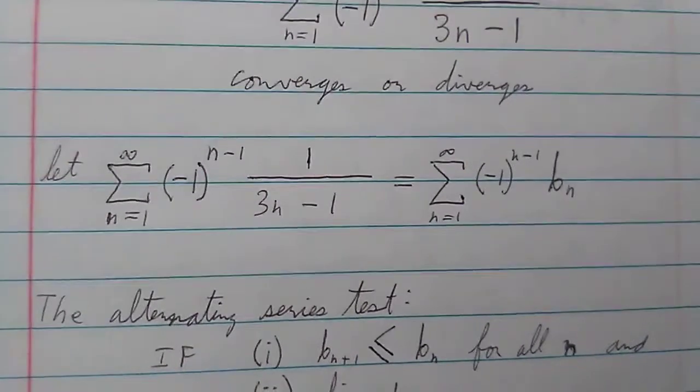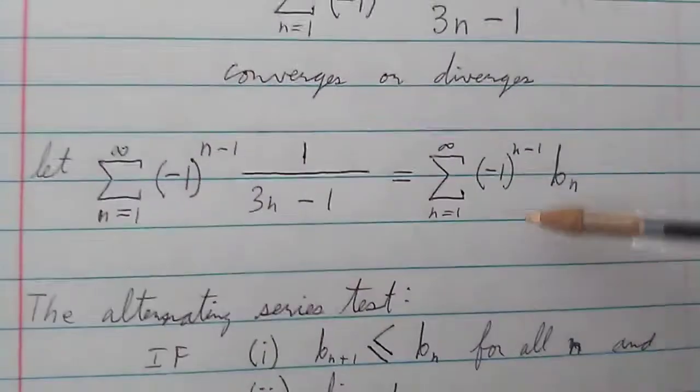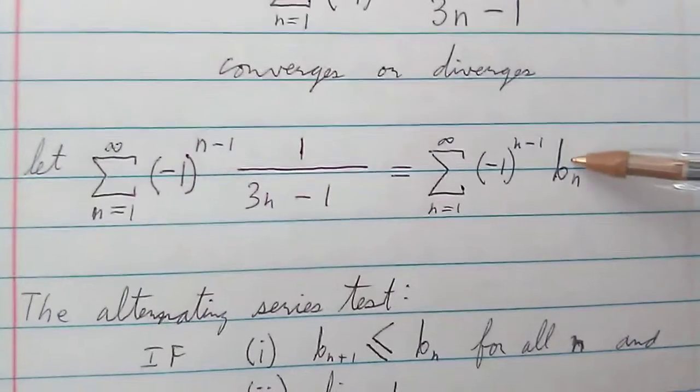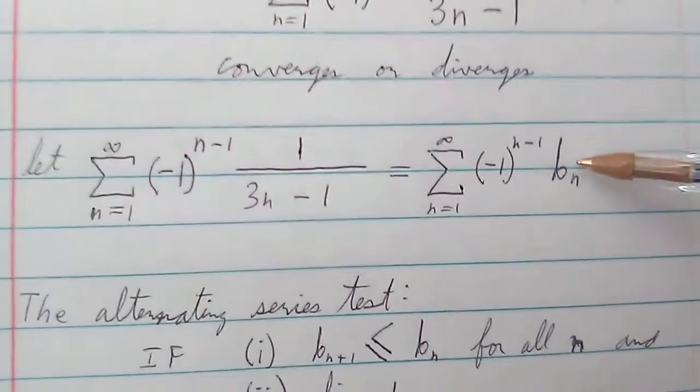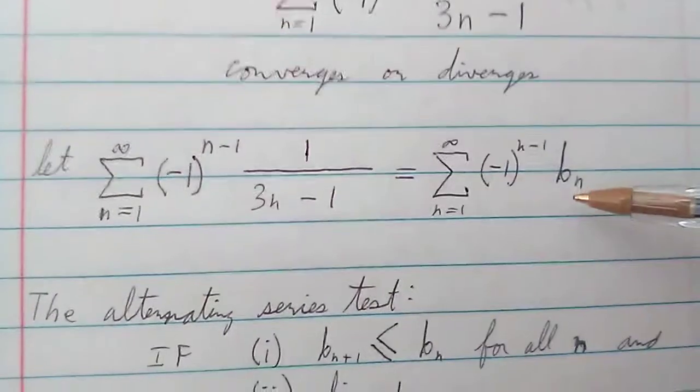And we'll be doing that using the alternating series test, which requires us to put it into this form right here. We'll take the part that does not include the negative 1 and call it b sub n.